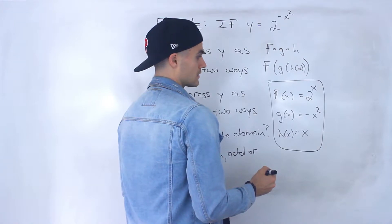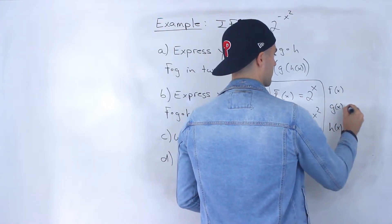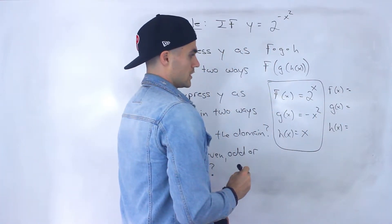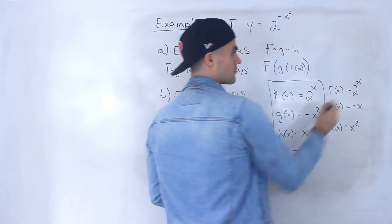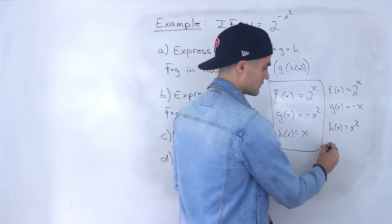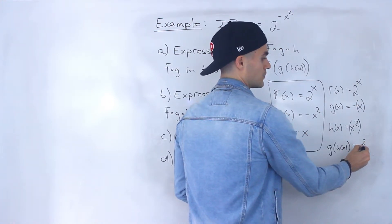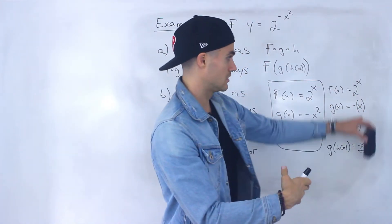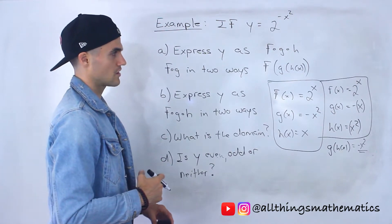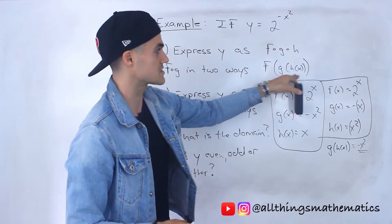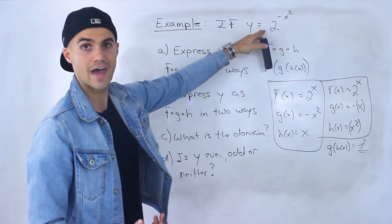What would be another way? We can let h of x be x squared, g of x be negative x, and then f of x is 2 to the power of x again. Notice in this case, what's g of h of x going to be? We would plug in x squared for this x here, so we'd end up with negative x squared. And then we'd plug in this expression for this x value — f of that expression would be 2 to the negative x squared. So that is another possibility for part B. With three functions, you've got to first find an expression for g of h of x, and then make sure that when you plug it into f, you get the original expression.